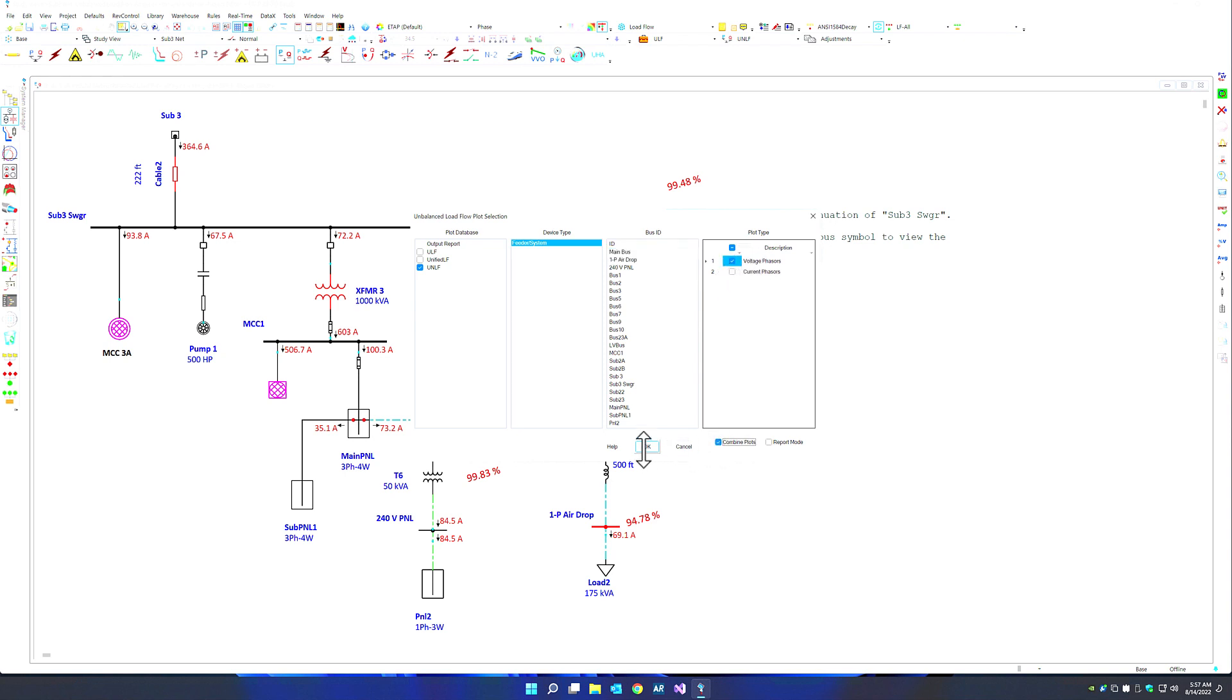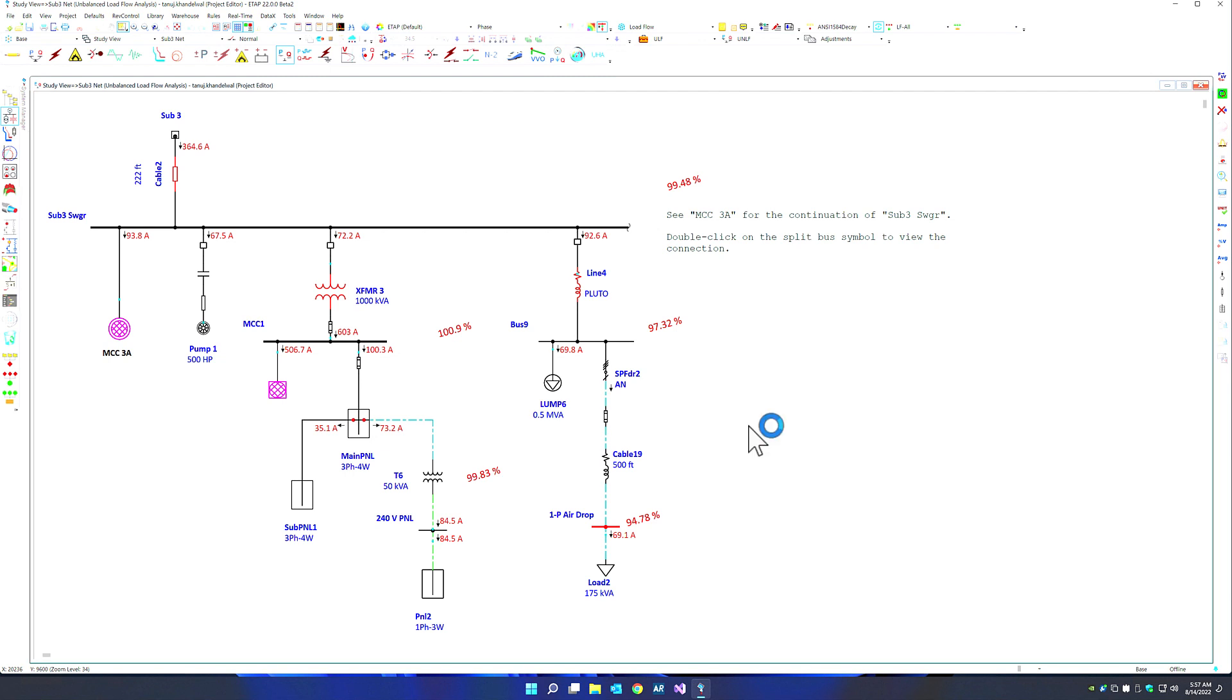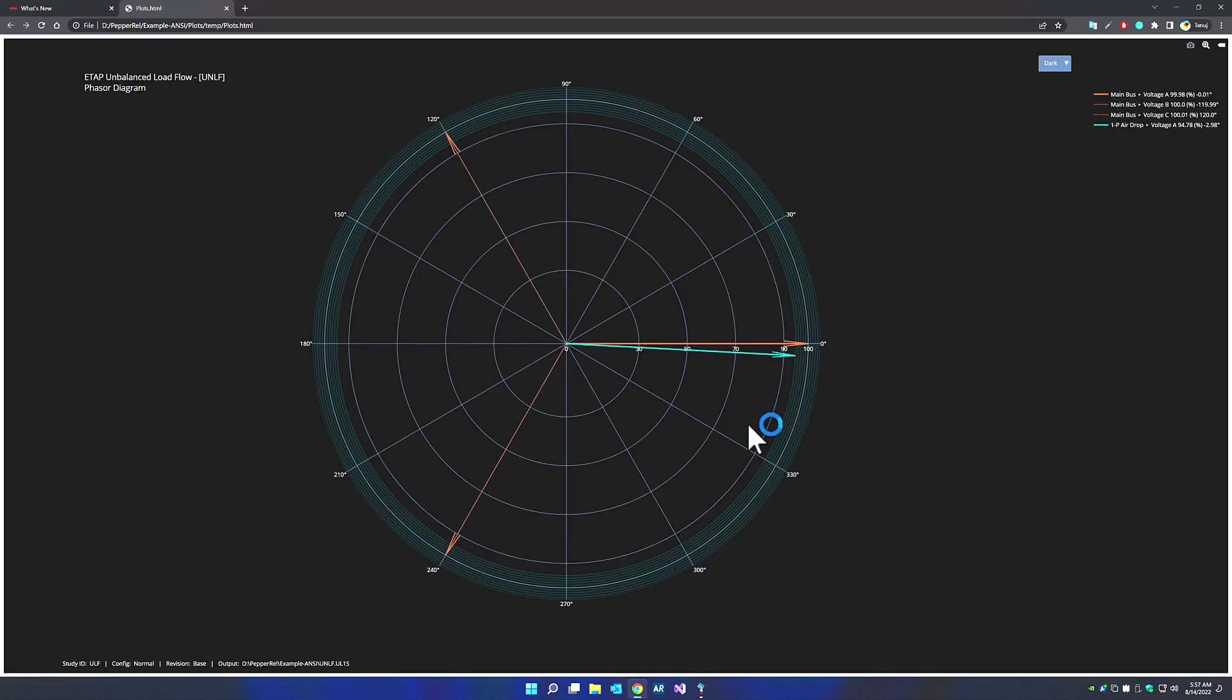Looking at the voltage phasers in a combination, ETAB gives us a very clear indication or a clear picture showing us the phasers as expected for the main bus, which is relatively balanced, and our single-phase vector, which is magnitude and angle for the single-phase bus.